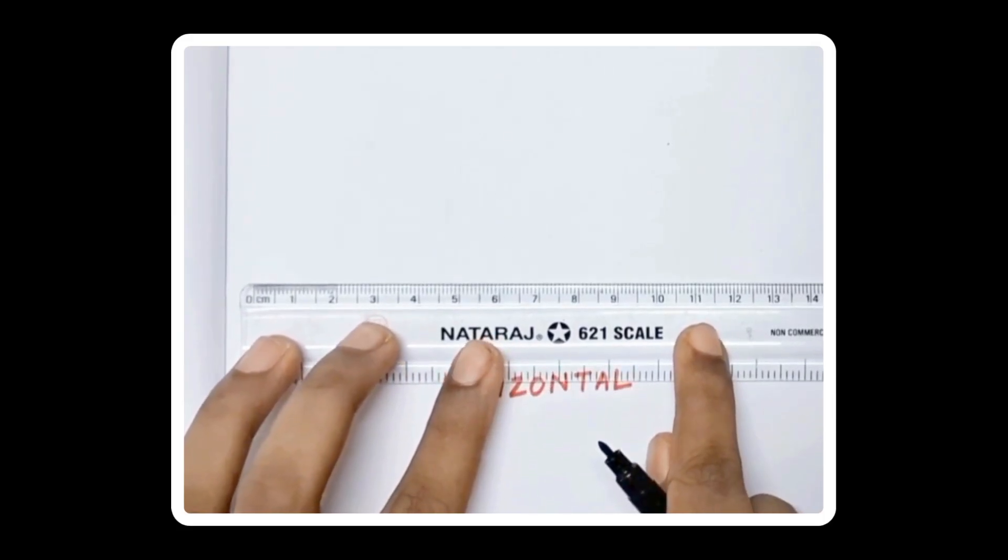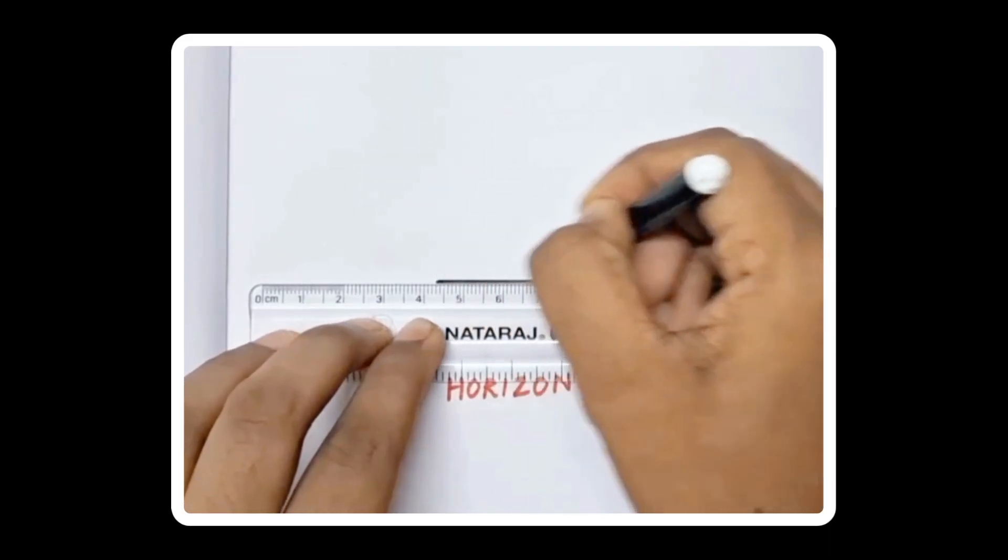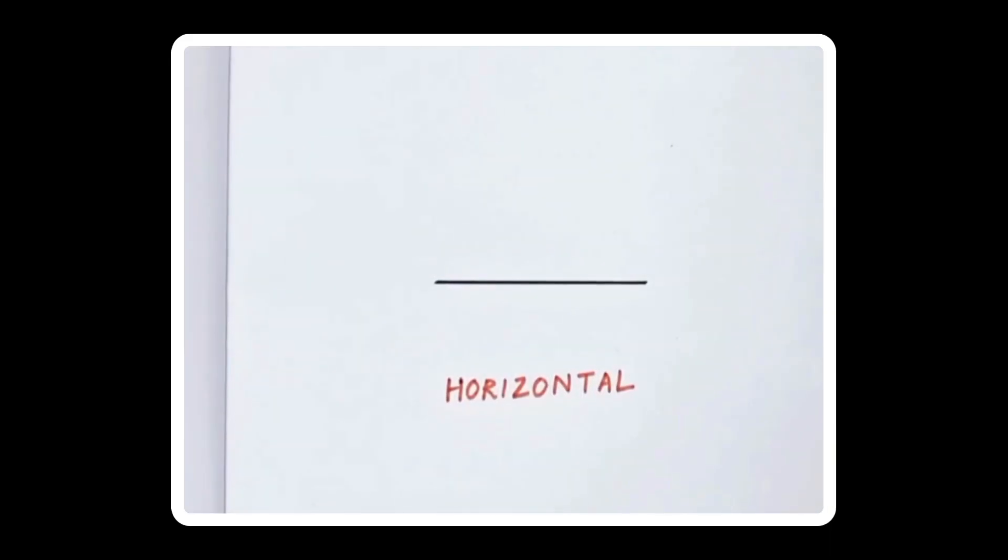Horizontal lines go side to side like this. They are also called sleeping lines. And here is our horizontal line.